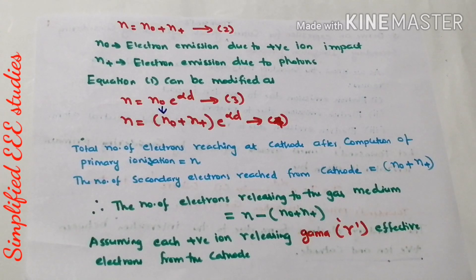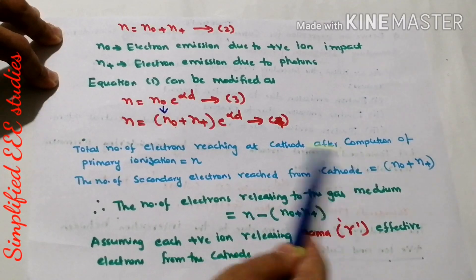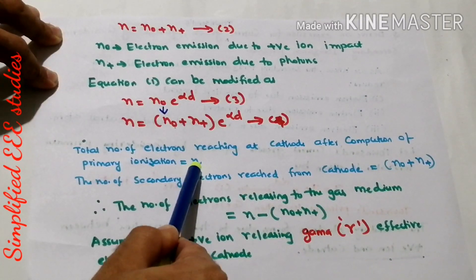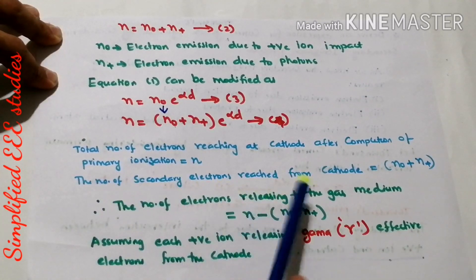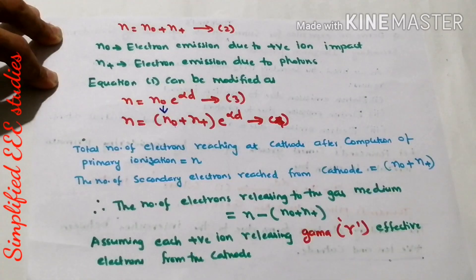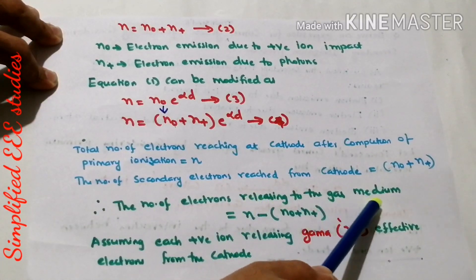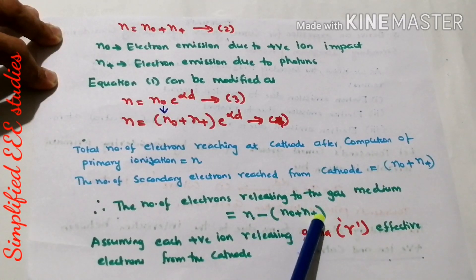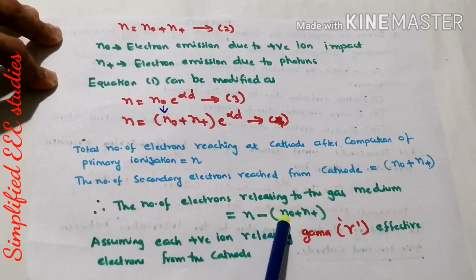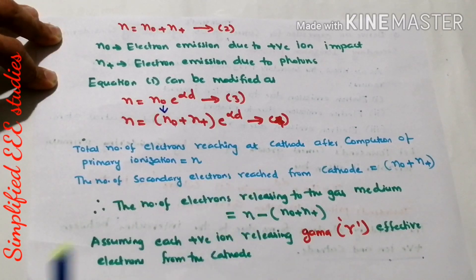Now let us consider the condition. The total number of electrons reaching the anode after primary ionization is N. The number of secondary electrons released from the cathode is N₀ + N⁺. Therefore, the total number of electrons releasing into the gaseous dielectric medium can be written as N minus (N₀ + N⁺). This is the total number of electrons releasing to the gaseous dielectric medium.